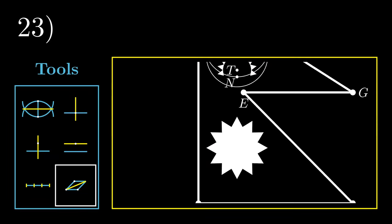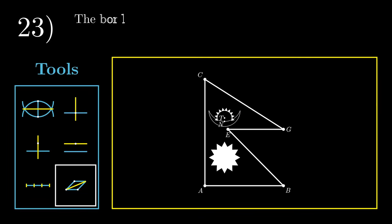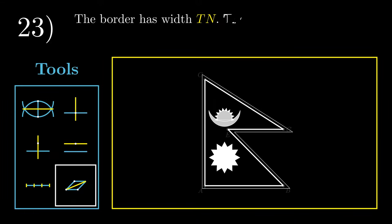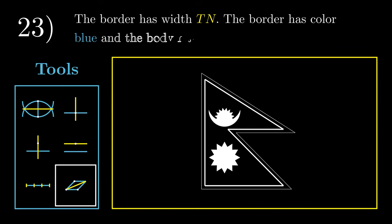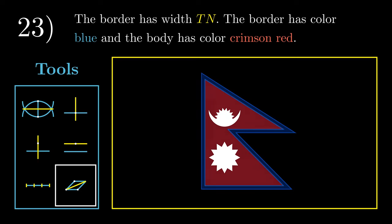For our final step, the border has width TN. We will colour the border with blue and the body of the flag with crimson red. This is the geometry behind the flag of Nepal, and the calculus behind circles can be explored here.